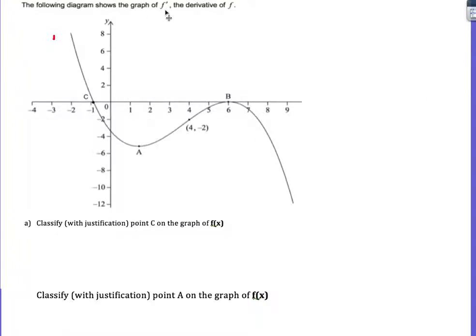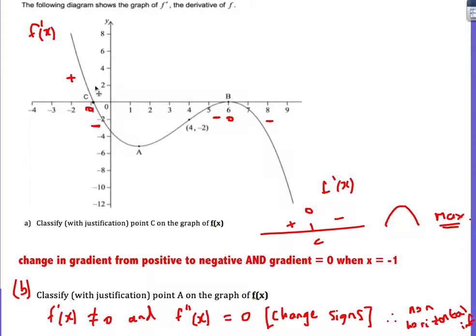This question sometimes seems confusing: I've got the derivative graph. This is f dash of x, not f of x. It says to classify point c on the original graph. Above the axis the gradient function is positive, beneath the axis it's negative, and at this point the gradient is 0 because it's the gradient graph. At point c, the gradient changes from positive to 0 to negative, which gives a maximum. The gradient is 0 when x is negative 1, therefore when x is negative 1 we have a maximum point.